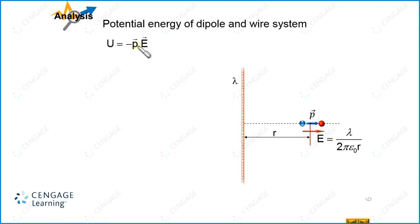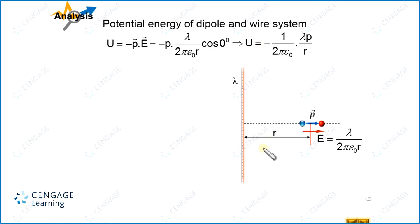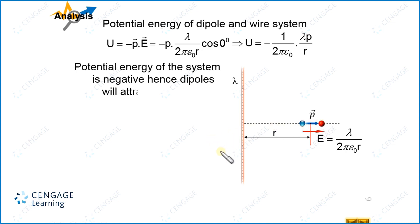Substituting the values of P and E, with the angle between the two vectors being 0 degrees, we get: U = −P × [λ / (2πε₀r)] × cos0° = −λP / (2πε₀r). The potential energy of the system is negative, which means the dipole will be attracted toward the wire — there will be a force of attraction of the dipole toward the wire. Now let us calculate the magnitude of the force.